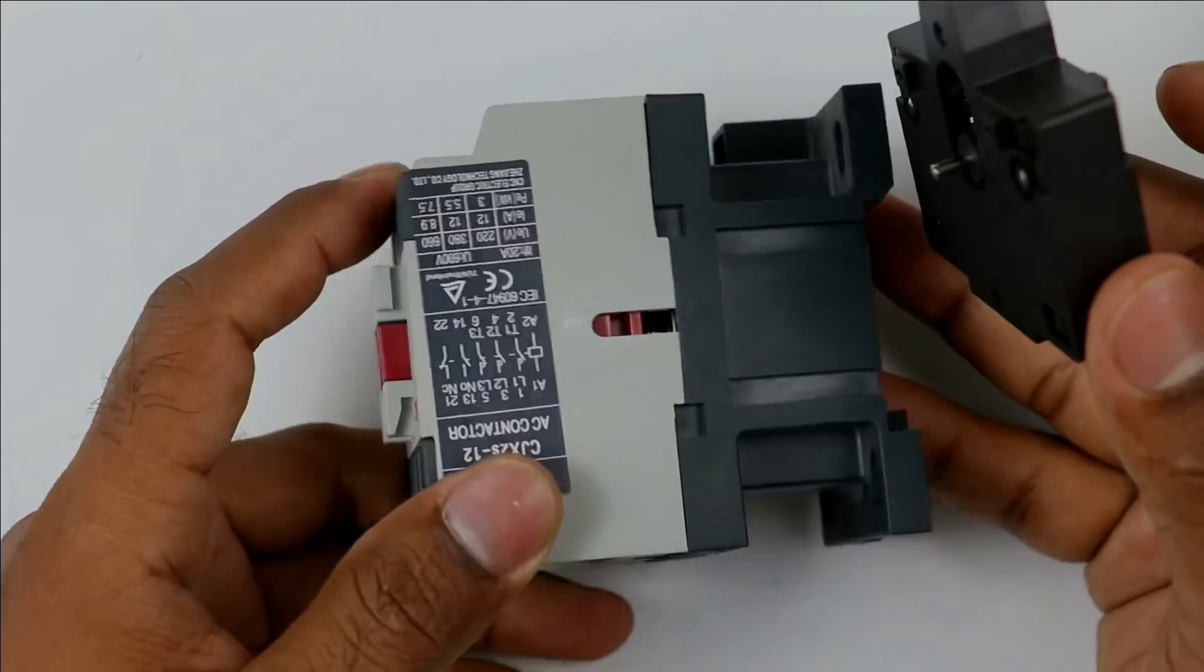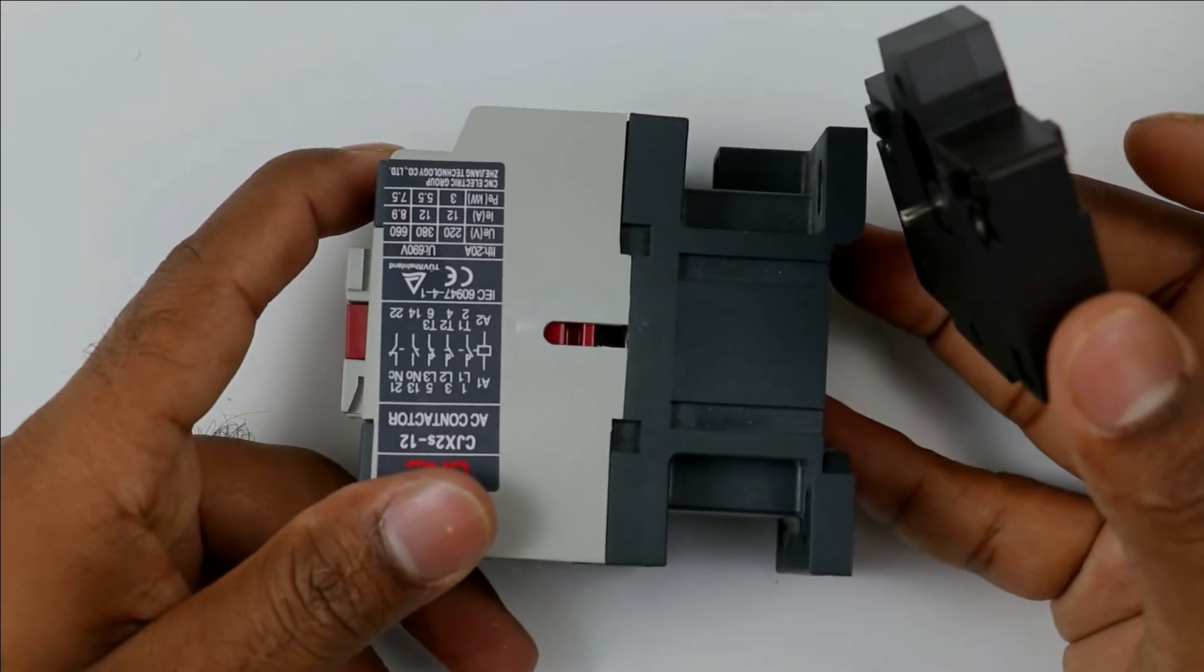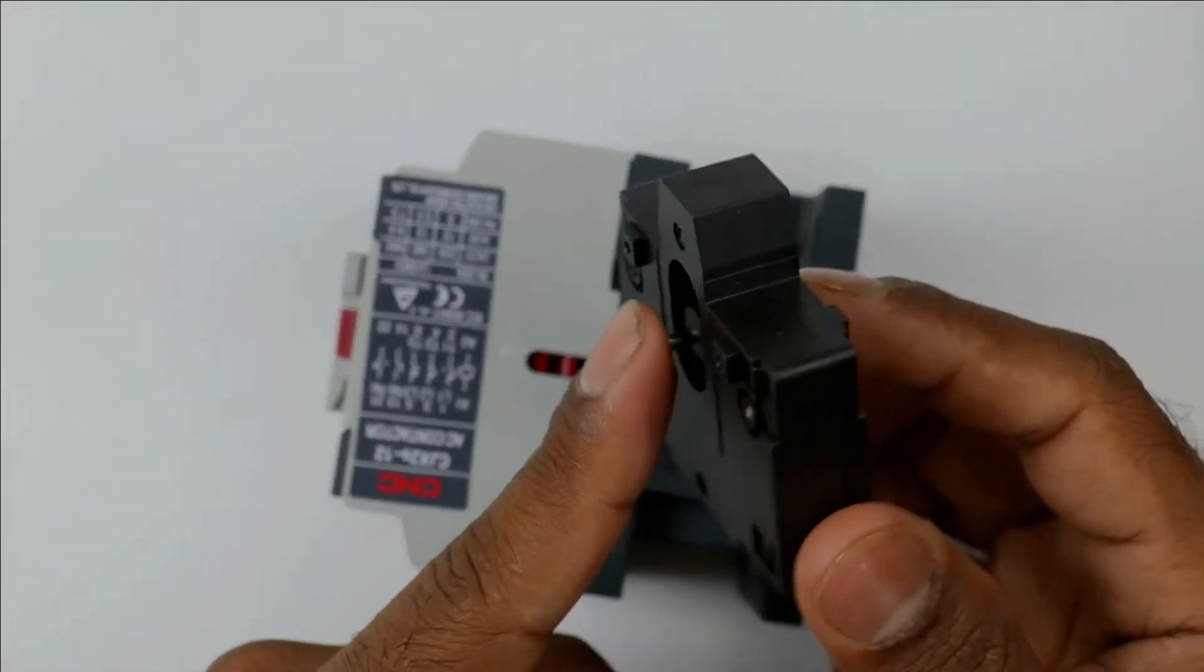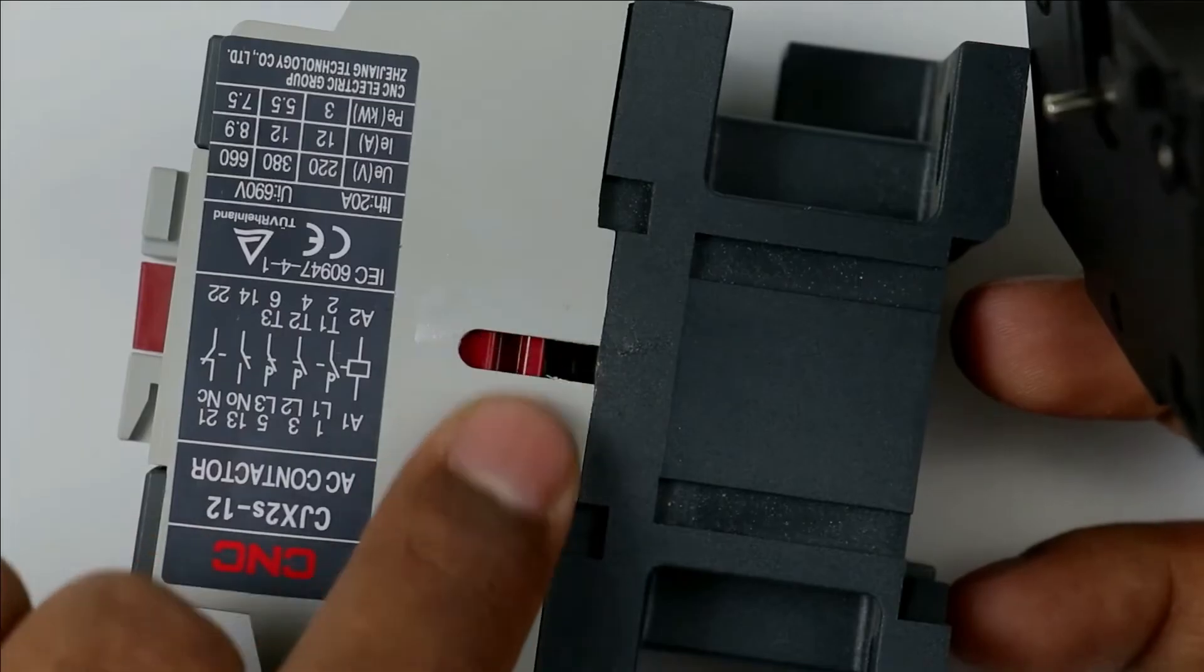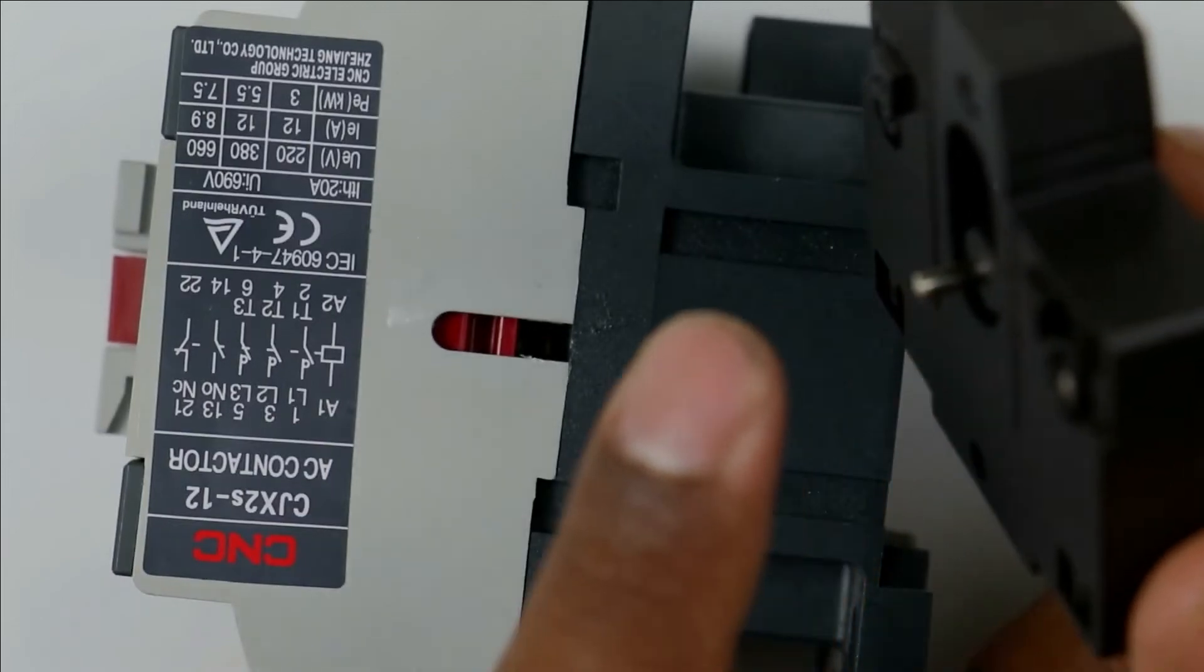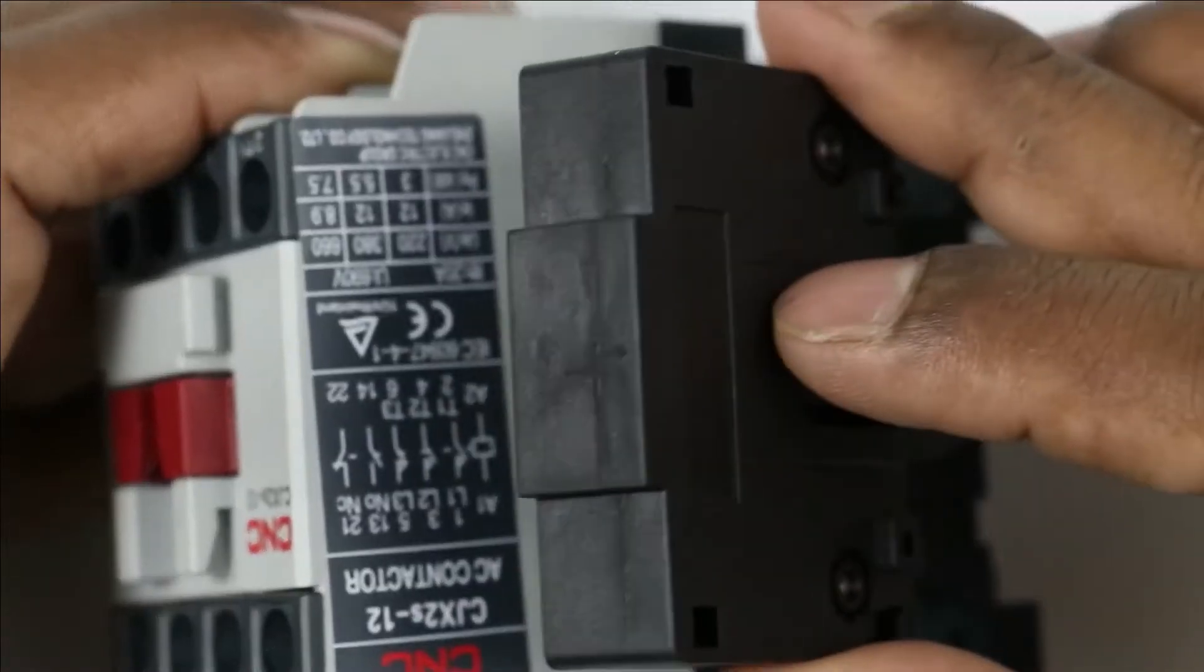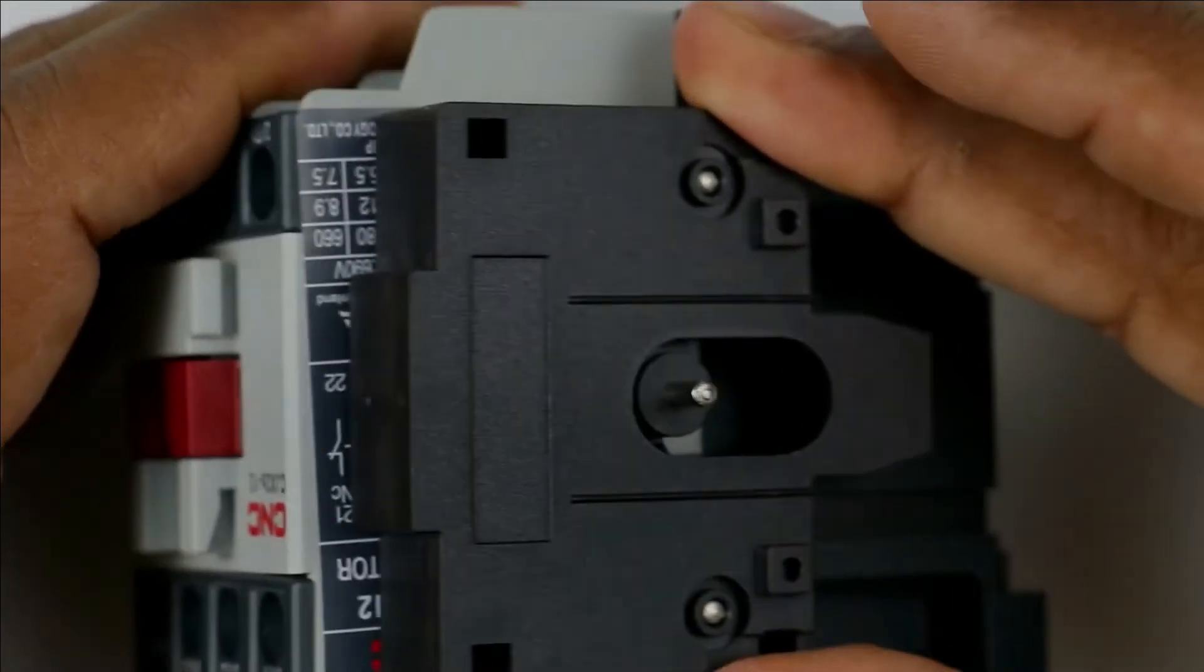What you have to do is place your contactor in this position. Now the contact you have now has a knob. Take this knob and look at the middle of contactor. A slot is present there. You have to place this lever here. This has mounted perfectly.